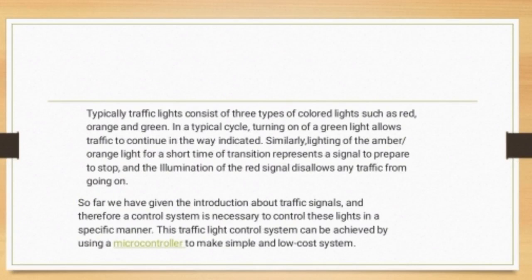In a typical cycle, turning on the green light allows traffic to continue in the indicated direction. The amber or orange light appears for a short transition period, representing a signal to prepare to stop. The red signal disallows any traffic from proceeding.